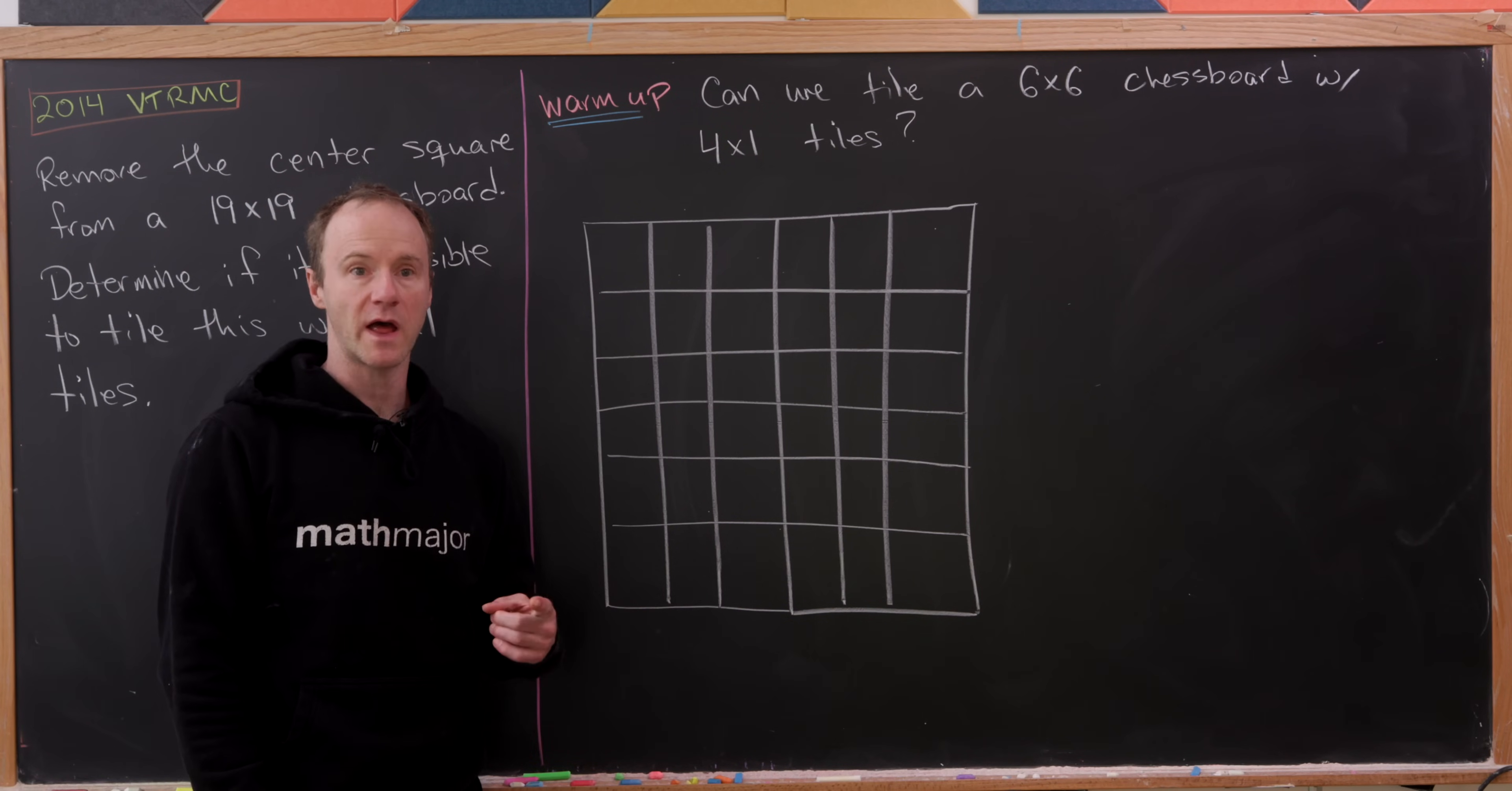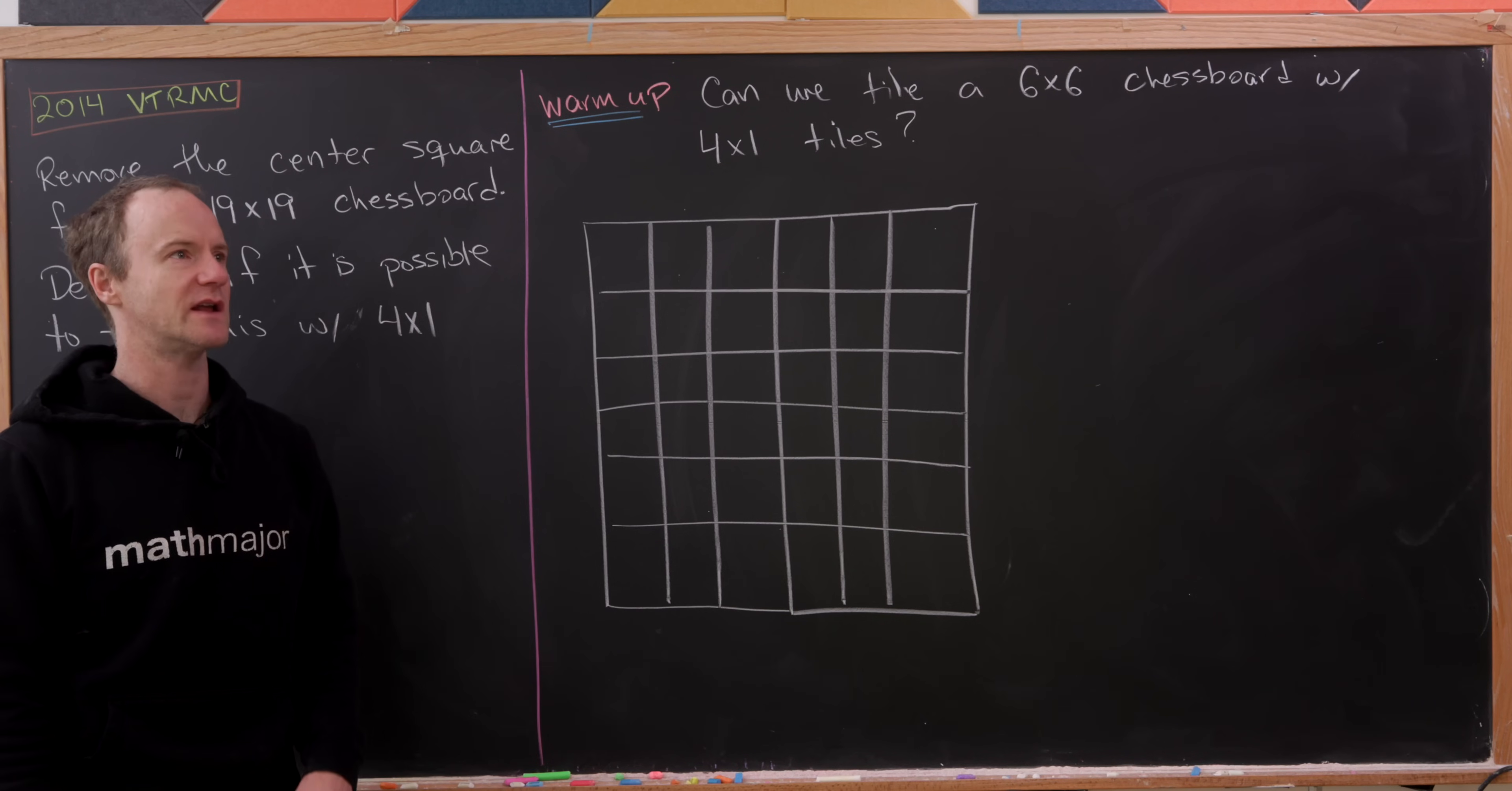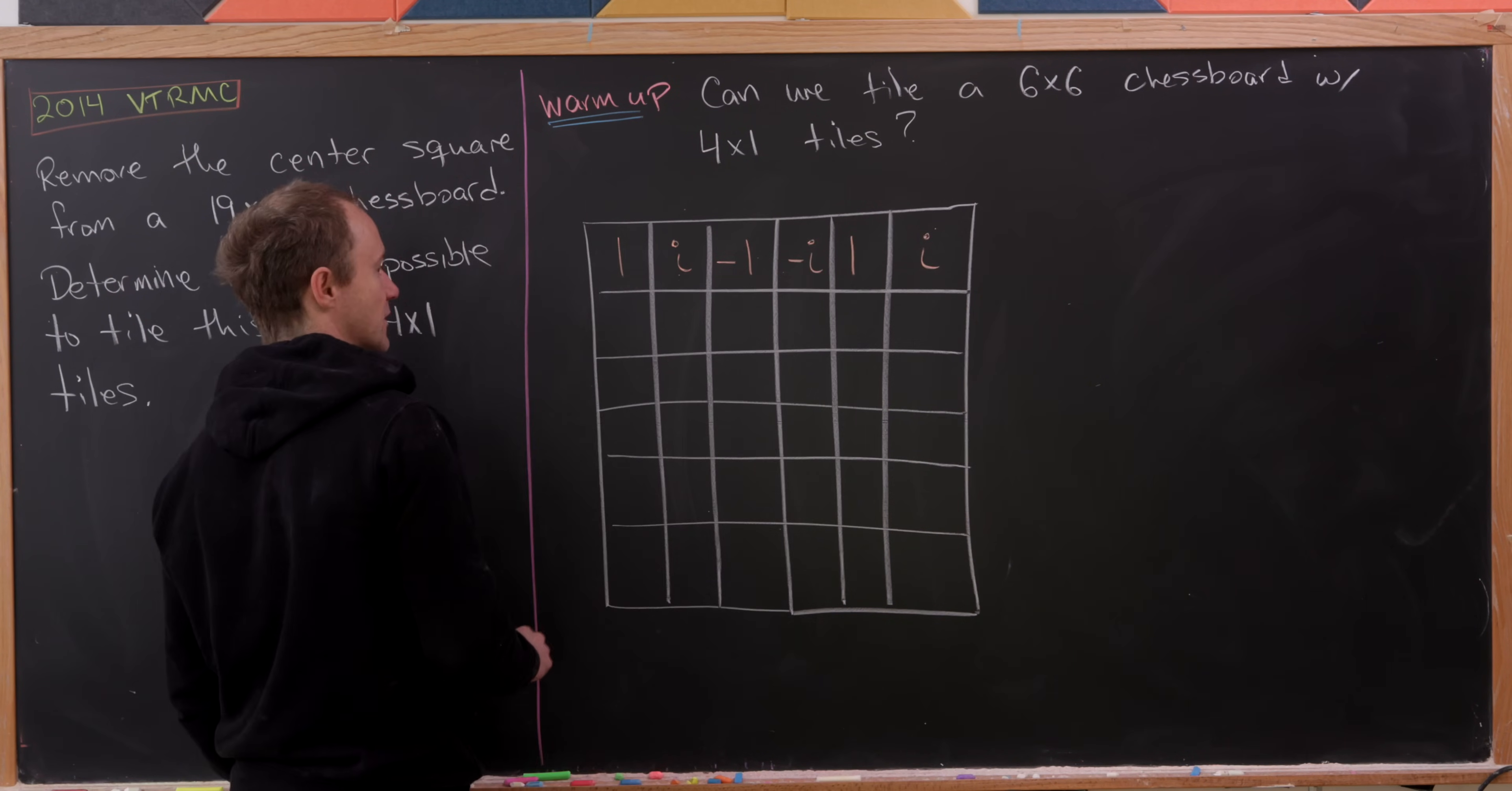In other words, the numbers 1, i, minus 1, and minus i. Those are all solutions to the equation z to the fourth equals 1. And here our tiling will be in a simple periodic pattern. So that means I'll start here with a 1 and then we'll have i, minus 1, minus i, 1, i, and so on and so forth.